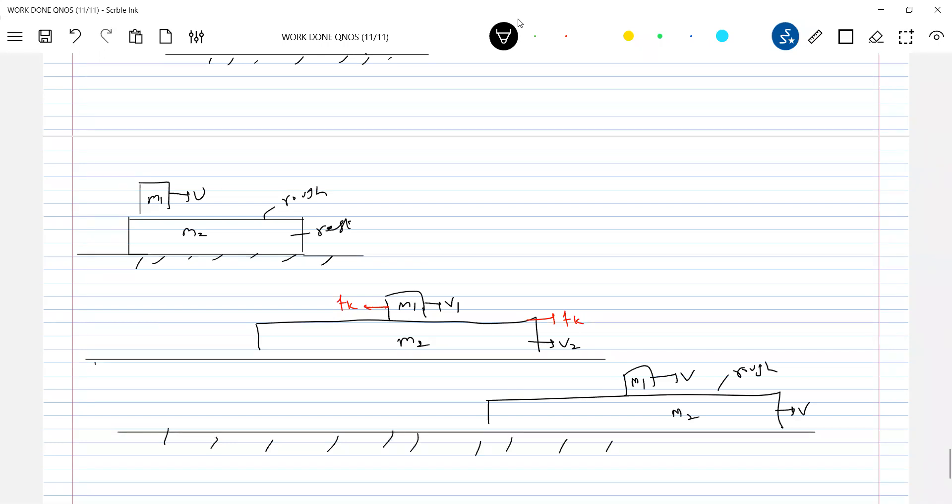Now, let's calculate the final kinetic energy and compare with the initial kinetic energy. Friction does negative work on the block M1, does positive work on this one. So for a block-plank system, for a system...